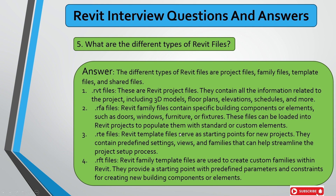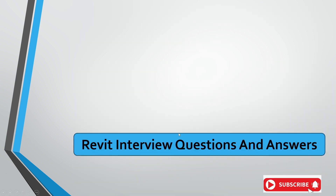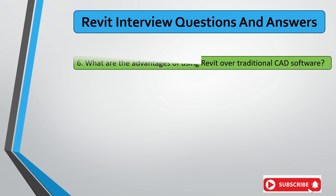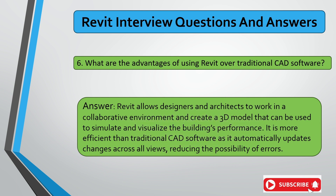The next question is: what are the advantages of using Revit over traditional CAD software? Revit allows designers and architects to work in a collaborative environment and create 3D models that can be used to simulate and visualize building performance. It is more efficient than traditional CAD software — automatically generating 3D views and many other views. You can easily visualize things and see clashes between all systems in the Revit 3D model.